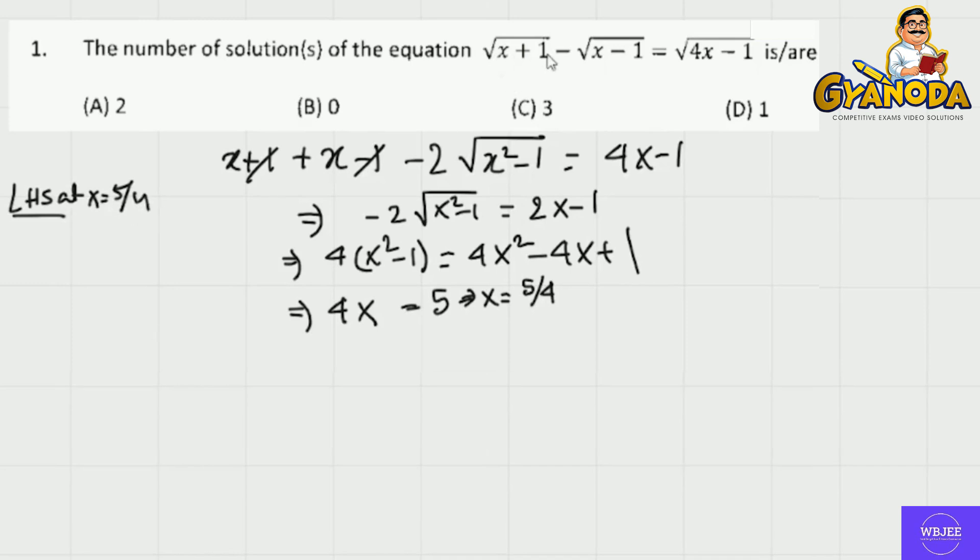So root 5 by 4 plus 1 equals 9 by 4. So 3 by 2 minus 5 by 4 minus 1. This implies this equals 1 by 2, equals 1 by 2.